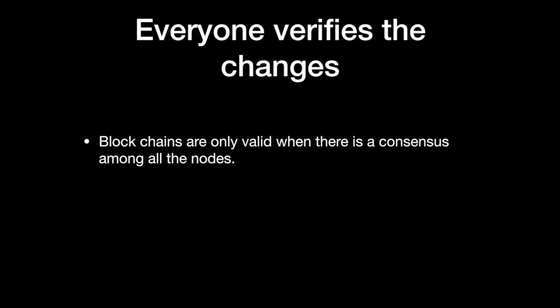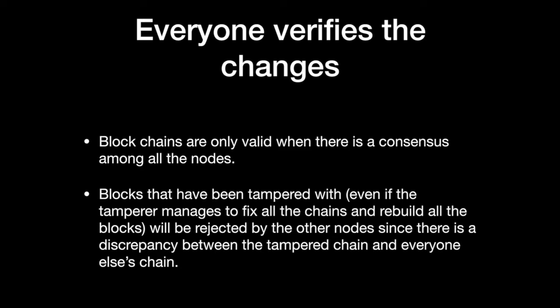Blockchains are only valid when there is a consensus among all the nodes, and blocks that have been tampered with, even if the tamper manages to fix all the chains and rebuild all the blocks, it will be rejected by other nodes, since there is a discrepancy between the tampered chain and everyone else's chain.